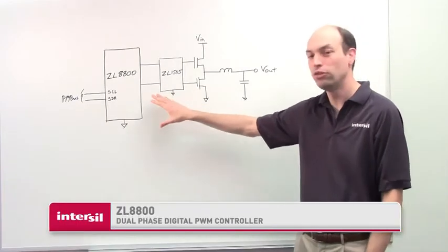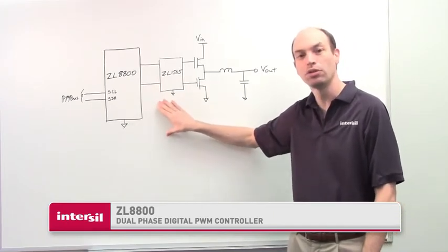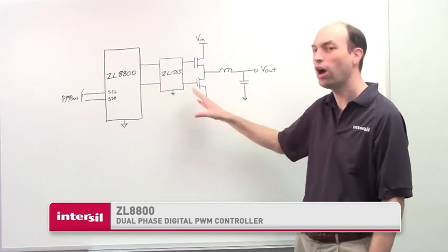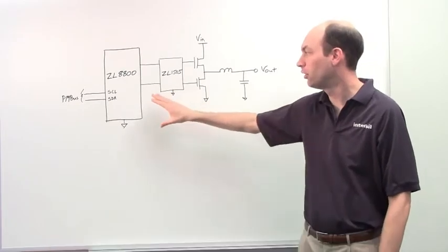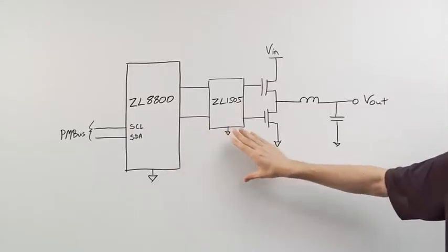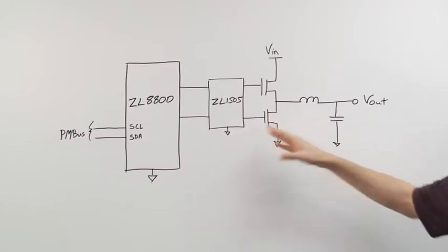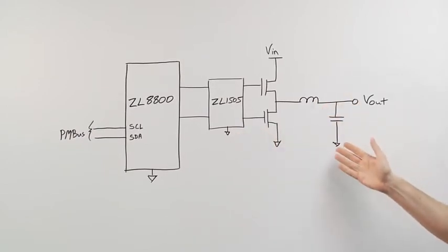This device is a dual phase or dual output PWM controller. We're showing one output with it right now, the ZL8800 device with an external ZL1505 gate driver, and of course it's a synchronous buck controller.